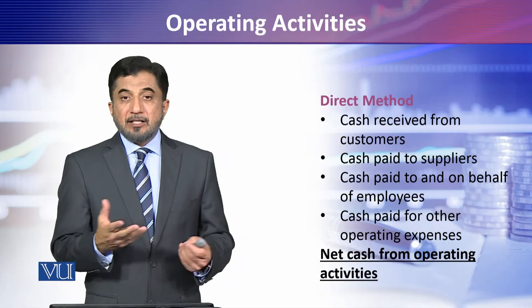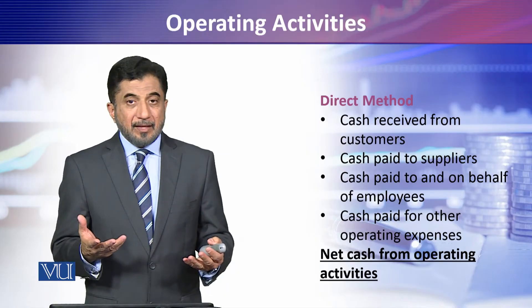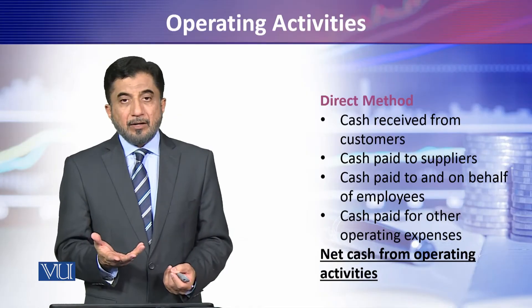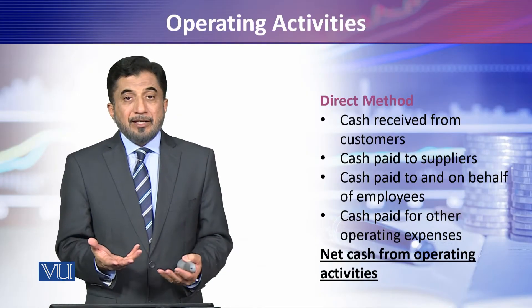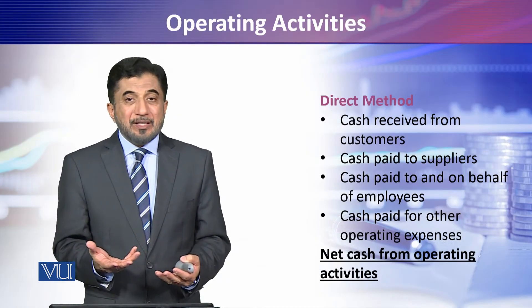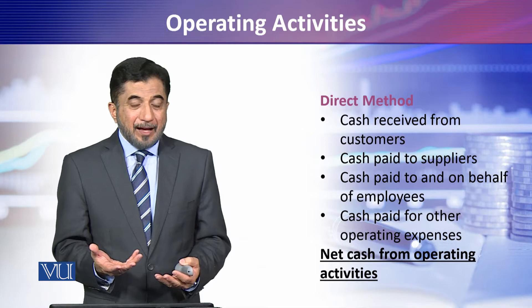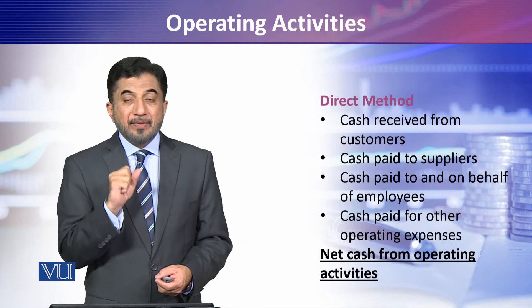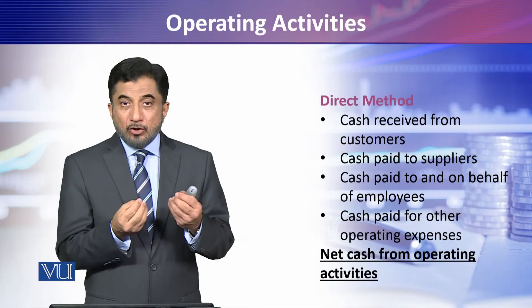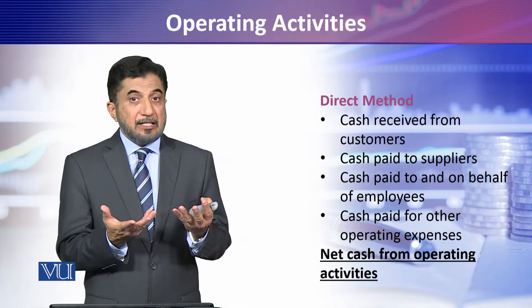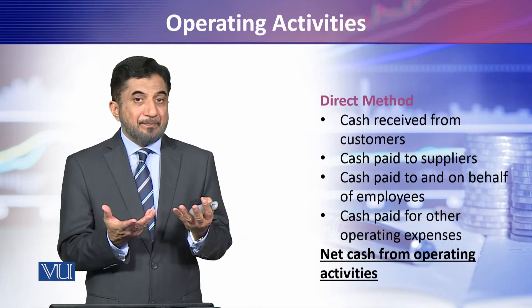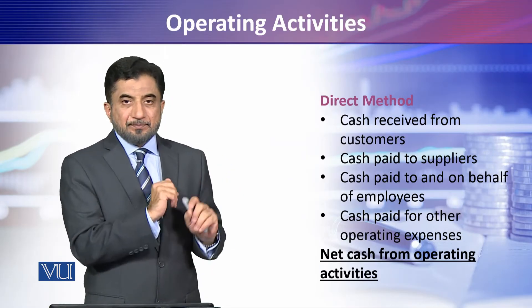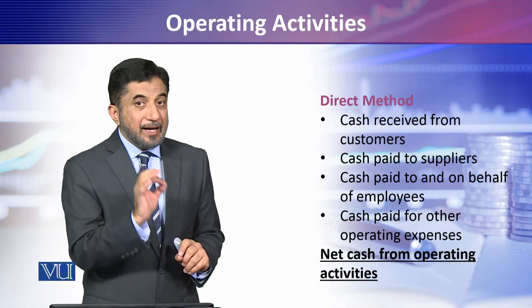In the direct method, we calculate cash collected from customers and cash paid to suppliers. From the statement of profit and loss, we take the sales amount — both cash sales and credit sales — to determine the cash collected from customers.